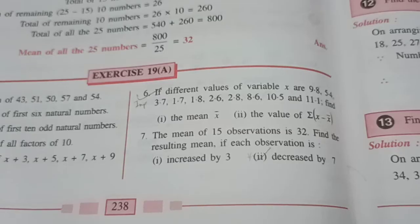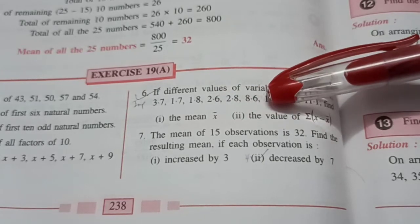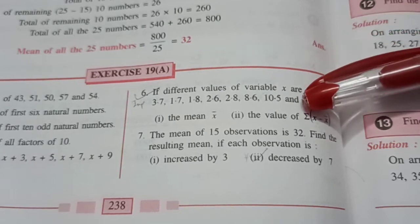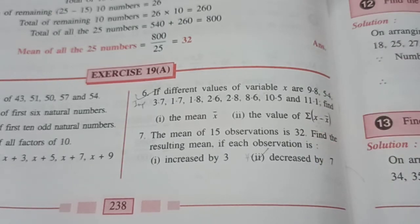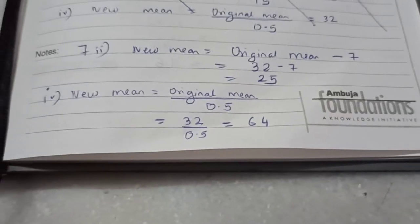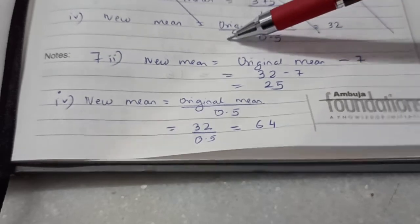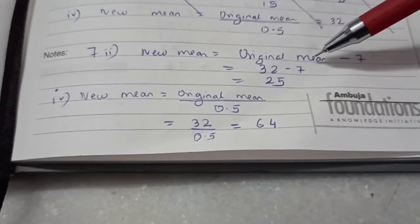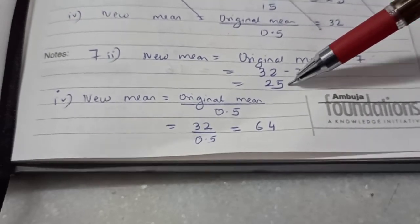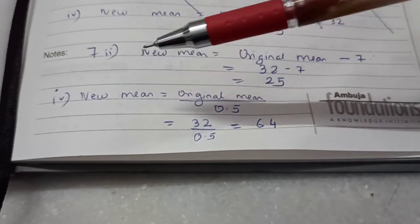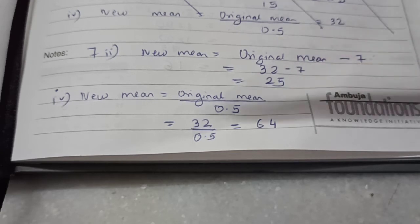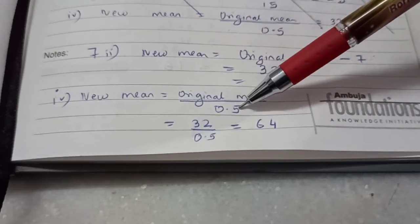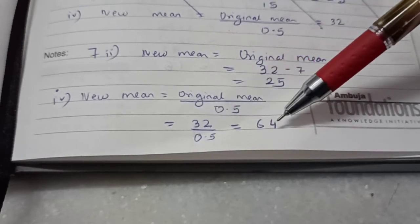And now let's do the seventh sum. There were totally 15 observations and the mean was 32. What if each of these observations' values were decreased by 7? Will the mean change? Obviously it will, but how will we calculate the new mean? Well, it's fairly straightforward. If each of the observations is being decreased by 7, then the new mean will also be found out by decreasing the original mean by 7. That is, 32 minus 7 is 25. Similarly in Roman number 4, they've asked what will be the mean if each of the observations is divided by 0.5. Well then, for the new mean also, it will be original mean upon 0.5, which is 1 upon 2, 2 goes up, and the answer comes up to 64.